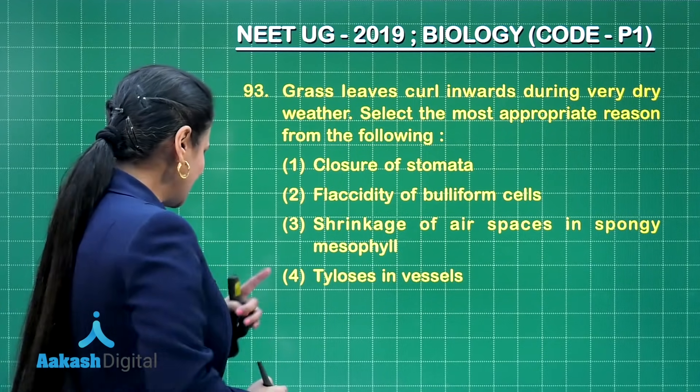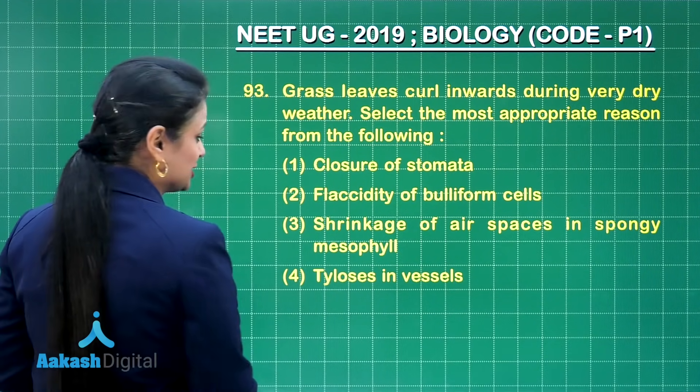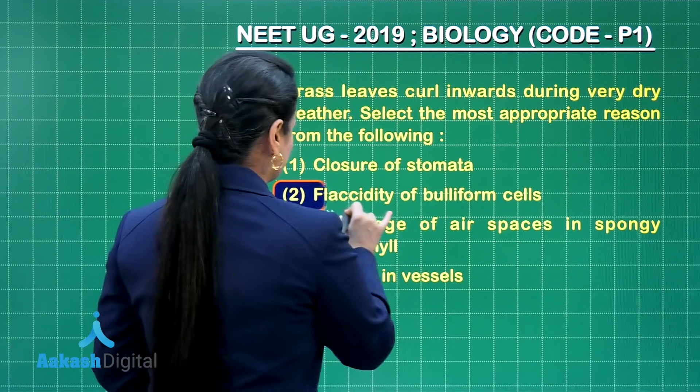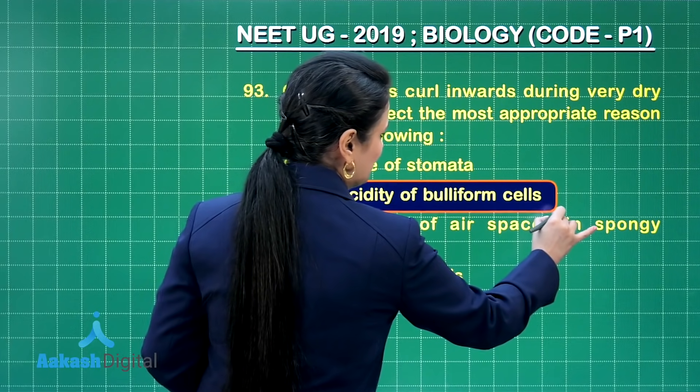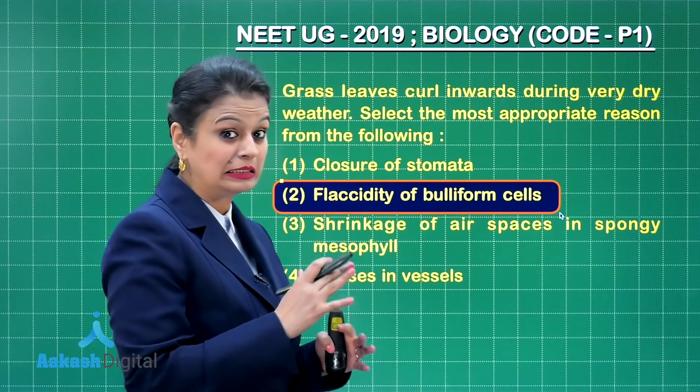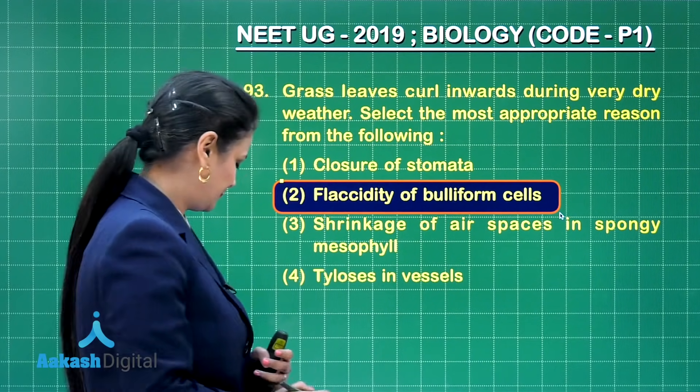The right answer to this question is option number two. Bulliform cells become flaccid, which results in leaf curling.